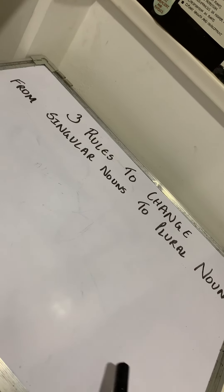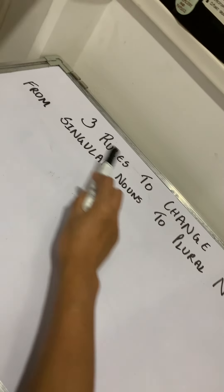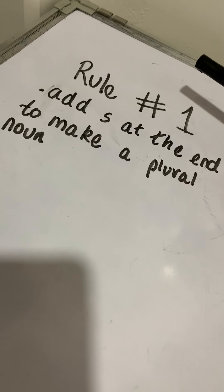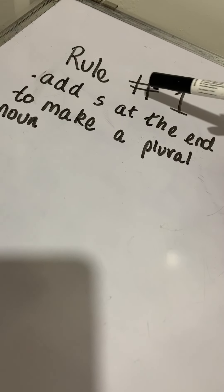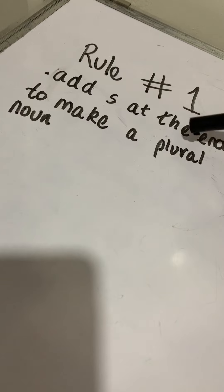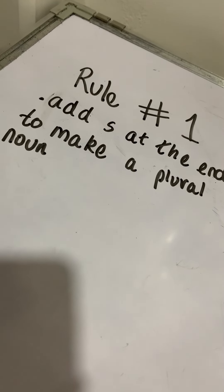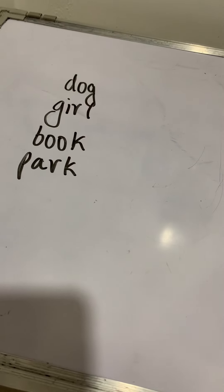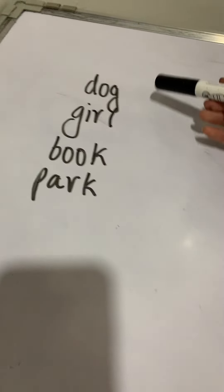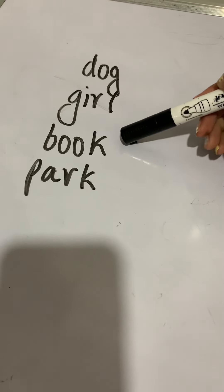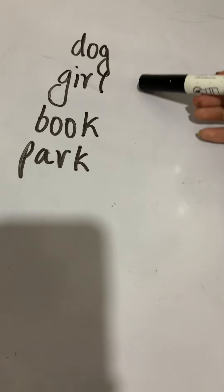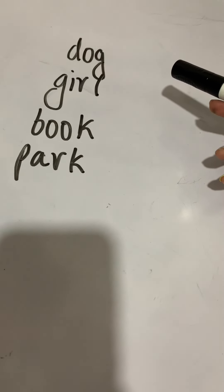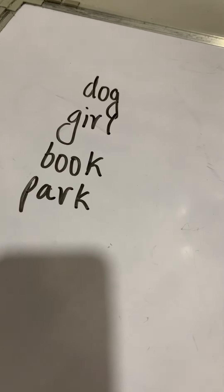Today we are going to learn the three rules to change from singular nouns to plural nouns. The first rule, rule number one: add S at the end to make a plural noun. You will have to add S at the end of a word to make it plural. Now let's look at a couple of singular nouns: dog, girl, book, park. So how do you make all these singular nouns plural to show that there is more than one? All you have to do is add S.